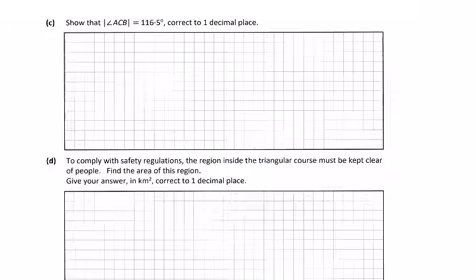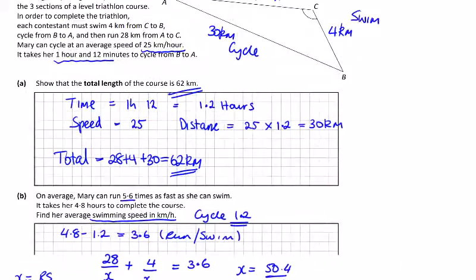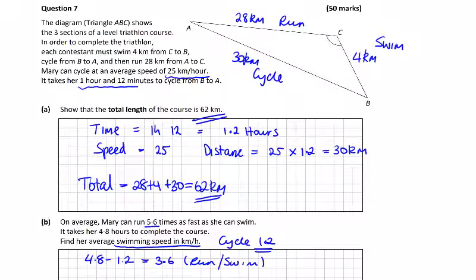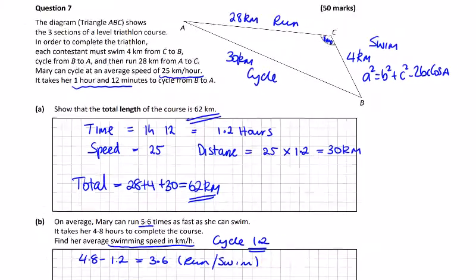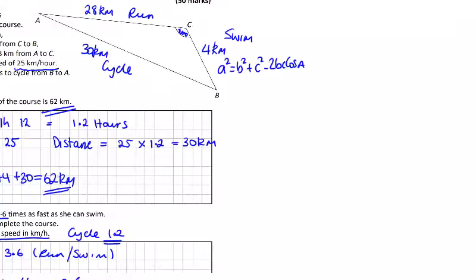Part C: show that angle ACB equals 116.5 degrees, correct to 1 decimal place. Let's look at the diagram - ACB 116.5. So here we have ACB. This is the cosine rule. We have a triangle with sides 30, 28, and 4. The only unknown is the angle. Cosine rule: A squared equals B squared plus C squared minus 2BC cos A will enable me to find the angle. The A is the angle and the side opposite. So this 30 will be my A here.